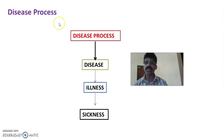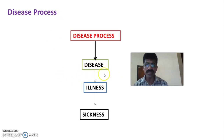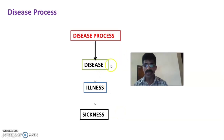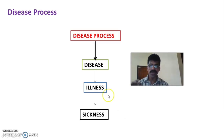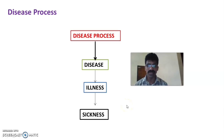Now let us see the disease process. The disease process begins with the onset of a disease. Then the next stage is illness, and the third stage is sickness. So in the disease process, the first stage is disease, the second stage is illness, and the third stage is sickness. First, a person will suffer from a particular disease, then that may lead to illness, and illness may make the person become sick.